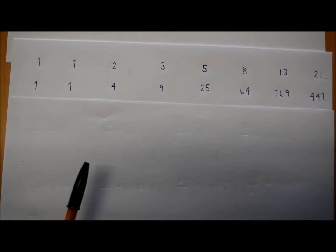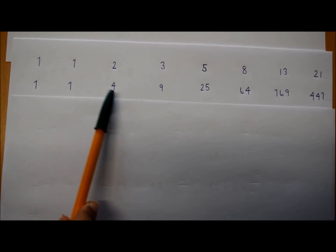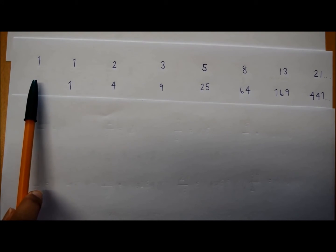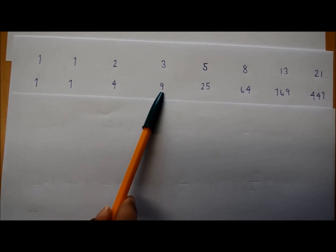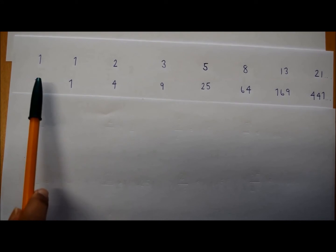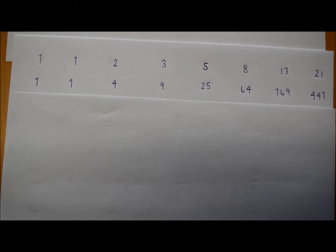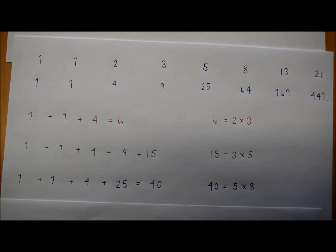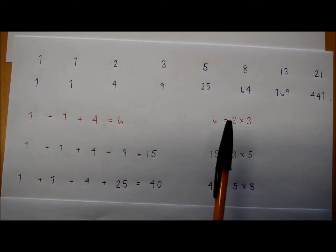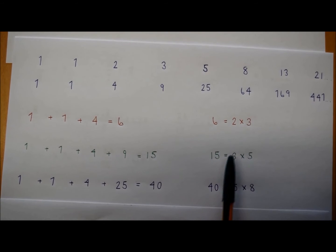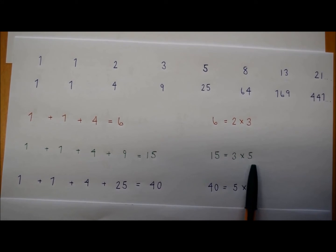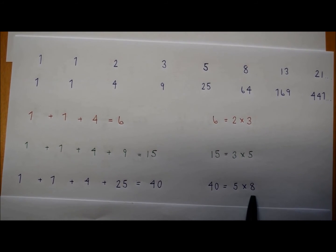We can see a more interesting pattern when we square the Fibonacci numbers. The pattern is 1, 1, 4, 9, 25. When we calculate 1 plus 1 plus 4 we get 6. When we calculate 1 plus 1 plus 4 plus 9 we get 15. When we calculate 1 plus 1 plus 4 plus 9 plus 25 we get 40. Now these numbers may not look like Fibonacci numbers, but 6 is equal to 2 times 3, 15 is equal to 3 times 5, and 40 is equal to 5 times 8, which are Fibonacci numbers.